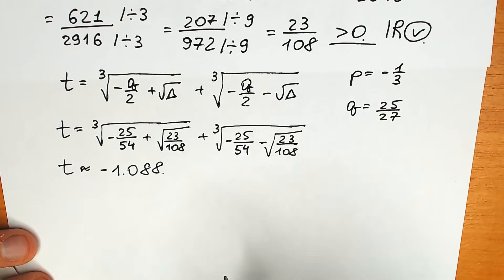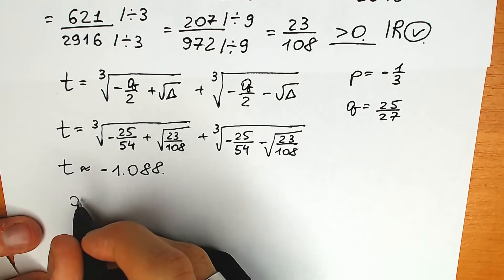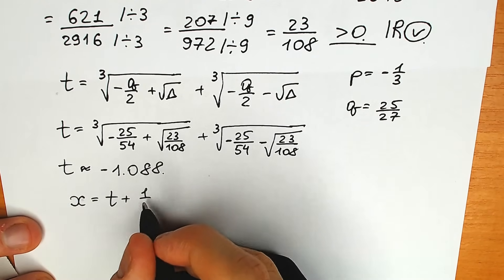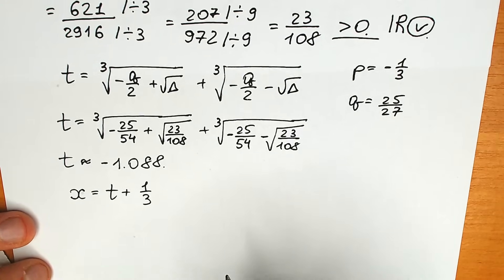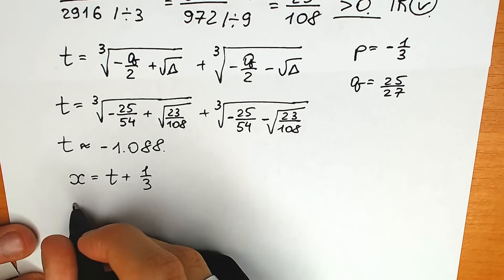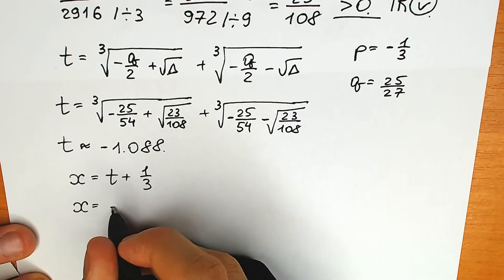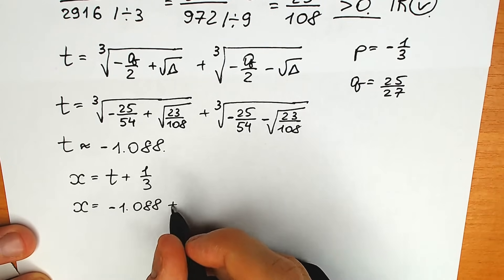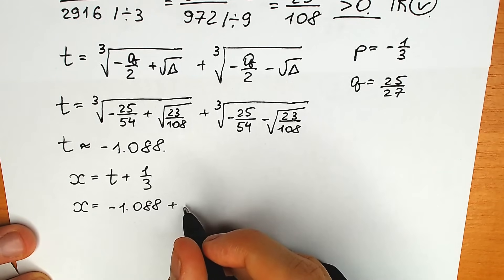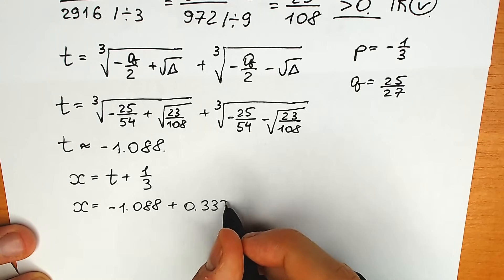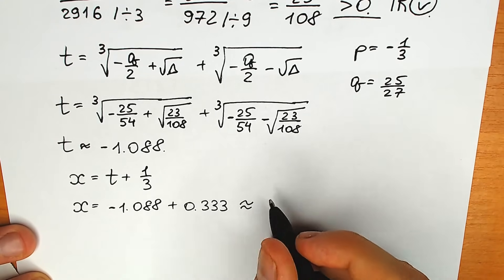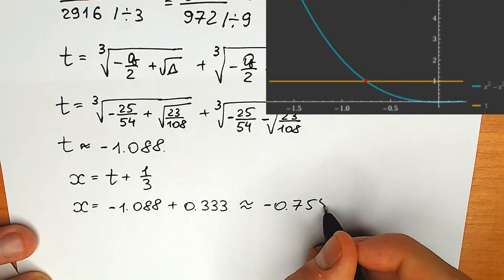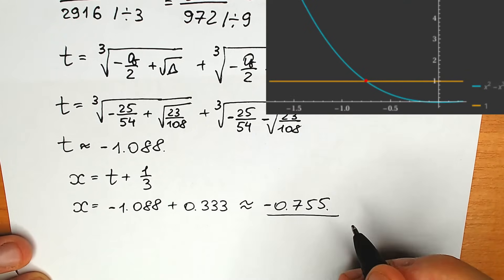Now let's go back to our substitution since we need to find x. From the beginning, x equals t plus 1 third. So x equals minus 1.0888 plus 0.333, which is approximately equal to minus 0.755. This is our only one root.